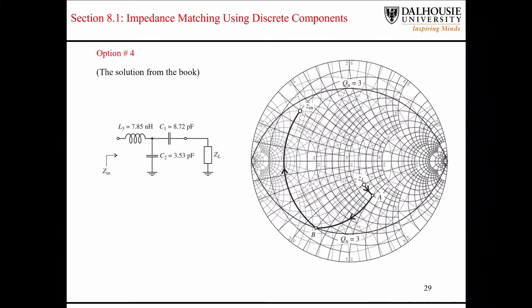This was the path taken in the book here. They started off with a series capacitor, then they used a shunt capacitor to rotate down like this, and then a series inductor to rotate up like this. So four different options.